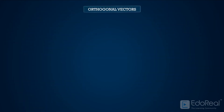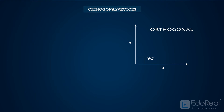Orthogonal vectors. If two vectors A and B are perpendicular to each other, that is, if the angle between the two vectors is 90 degrees, then the two vectors A and B are said to be orthogonal vectors.